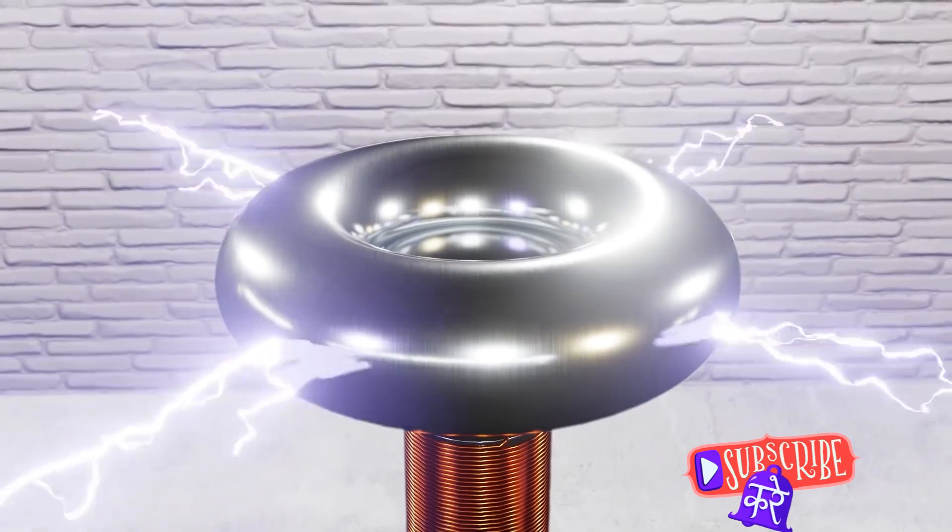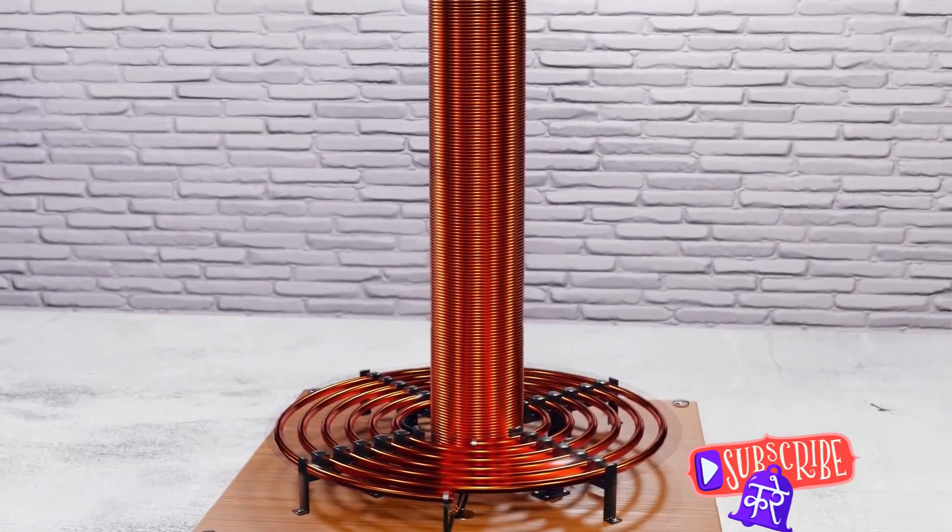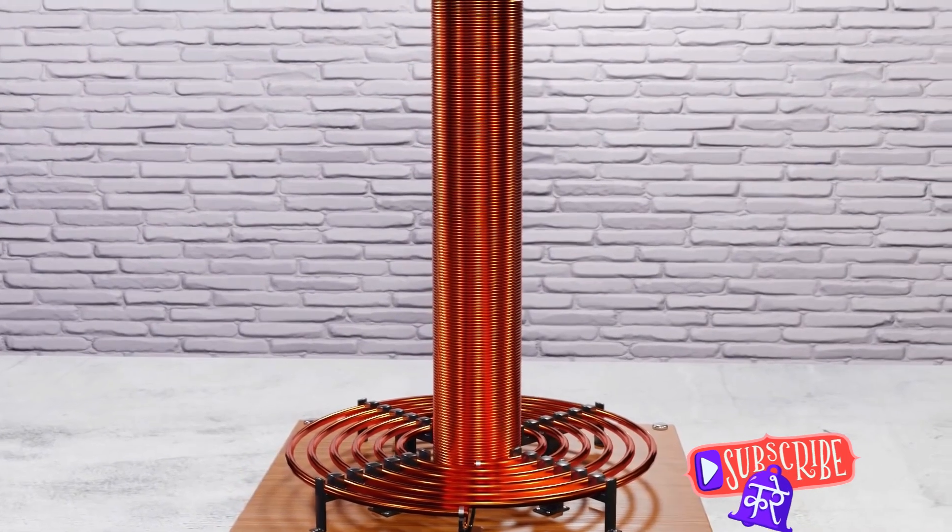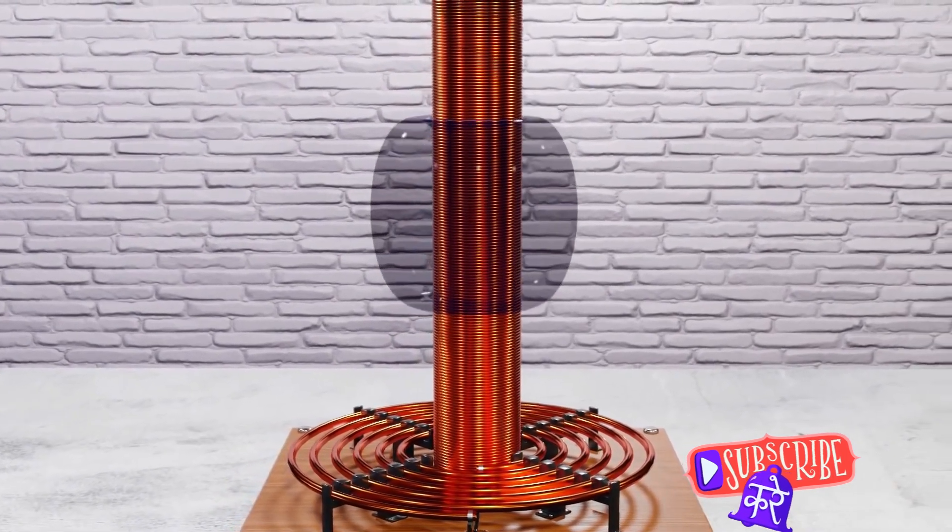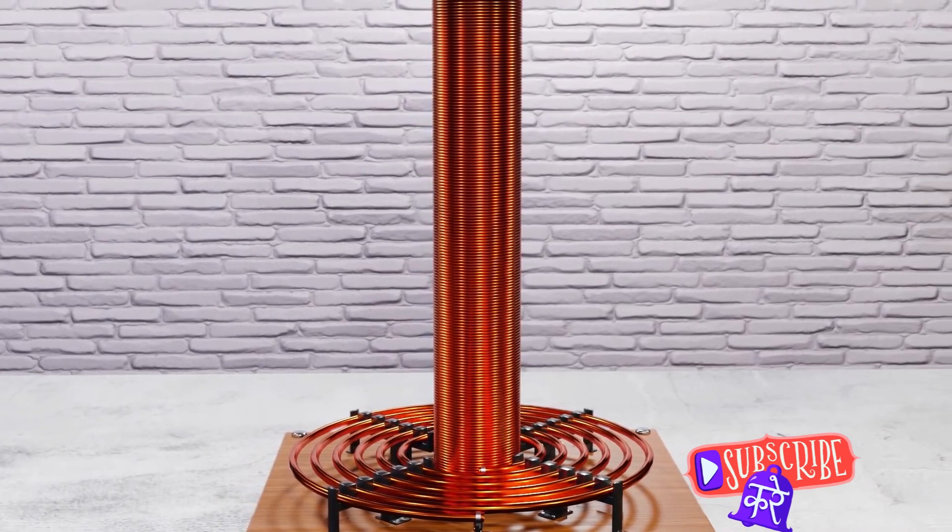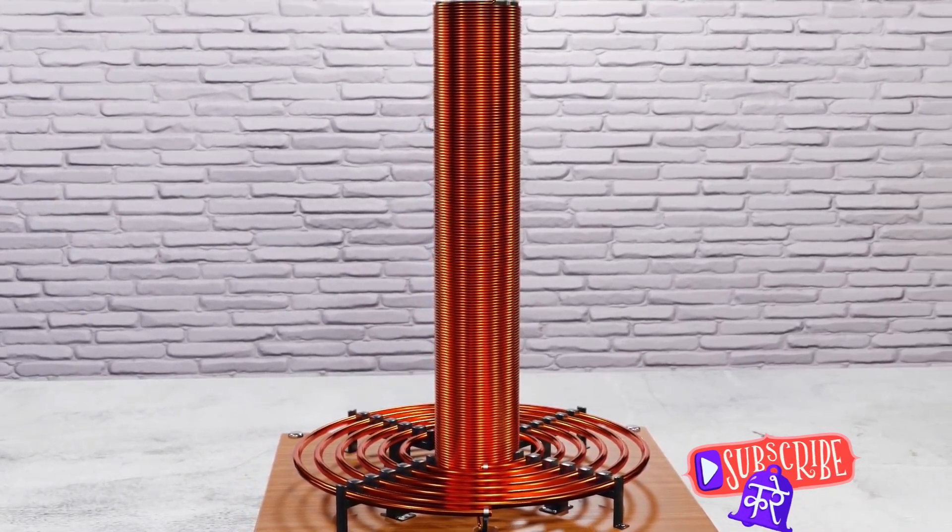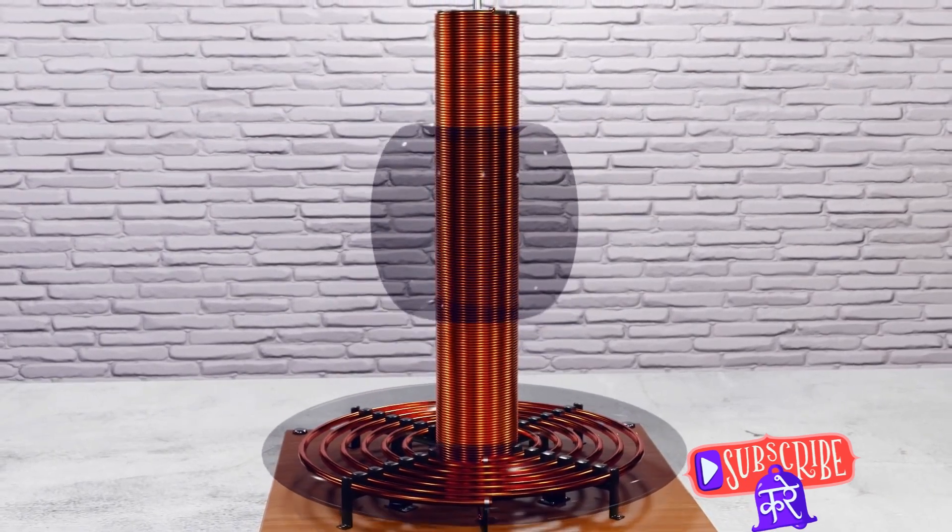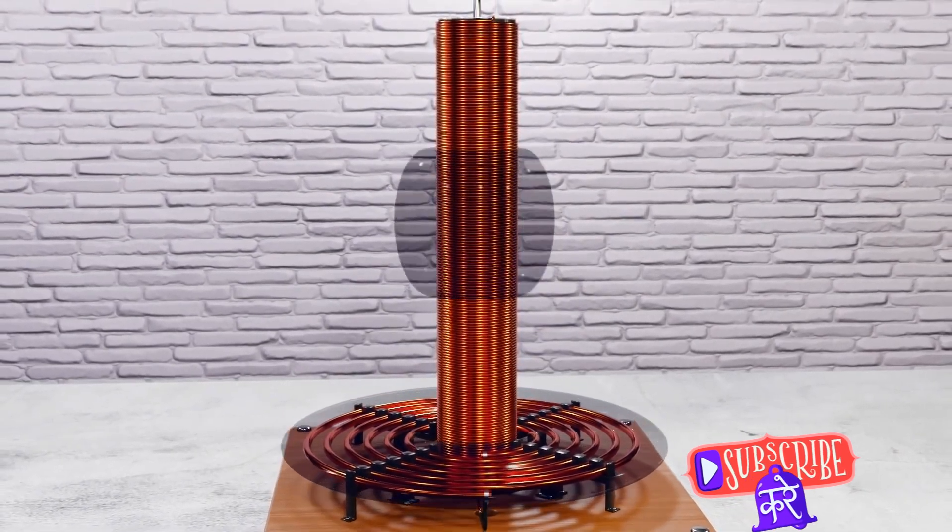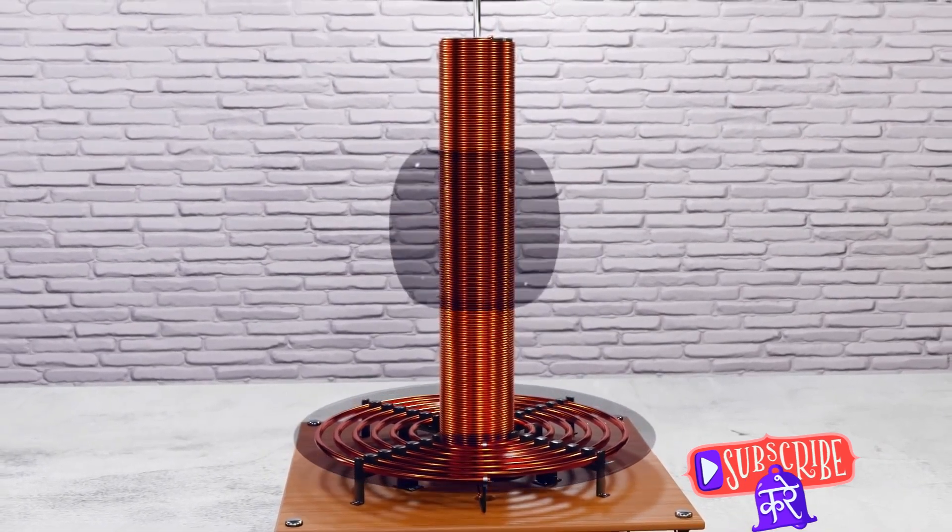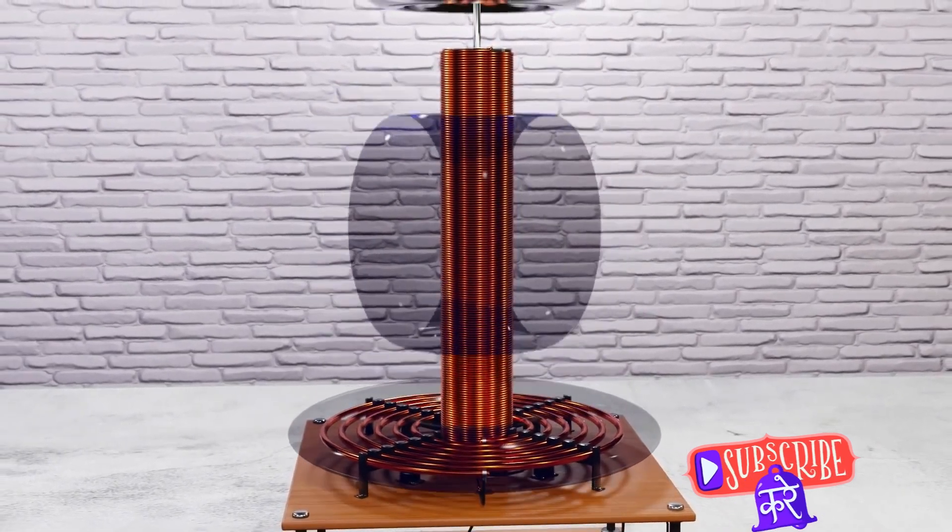So, in essence, the dance between the secondary coil and the spark gap is a crucial part of the Tesla coil's operation. The secondary coil receives energy from the primary coil, the spark gap controls when that energy is released, and the result is a breathtaking display of electrical power. The interaction between the secondary coil and the spark gap is what allows the Tesla coil to produce those magnificent high voltages.